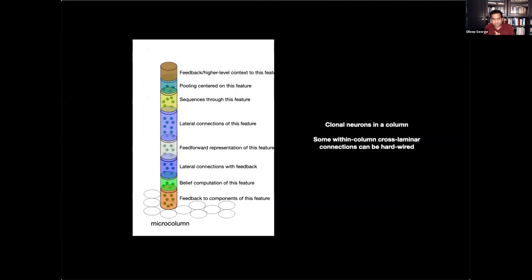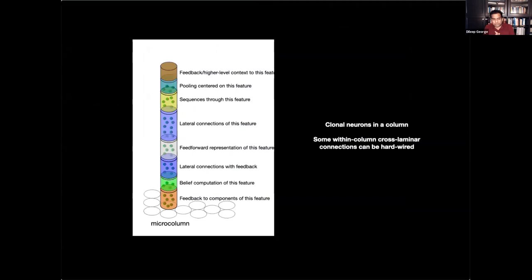And one conceptual thing that you might want to take away from this whole thing is that you can think of a micro column as a random variable, as a feature. And the column itself is representing this feature. But the different laminae in the column are representing different aspects of this feature. For example, how does this feature participate in a higher level feature? How does that feature participate in different lateral contexts? How does this feature participate or unfold into lower level components? And finally, how do you combine information from feed-forward, feedback, and lateral to produce the belief of the micro column?